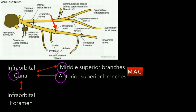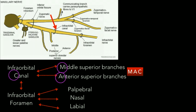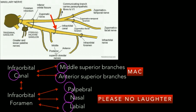The nerve then leaves through the infraorbital foramen and gives out three terminal branches: the palpebral, nasal, and labial branches. The easy way to remember this is by taking P from palpebral, N from nasal, and L from labial — and the mnemonic is 'Please No Laughter.' I hope this video has been beneficial to you.